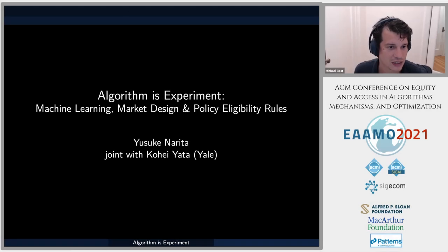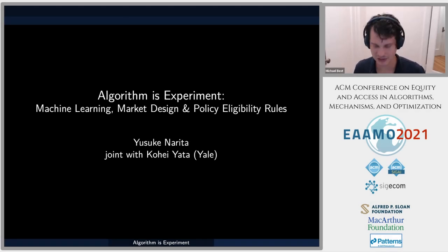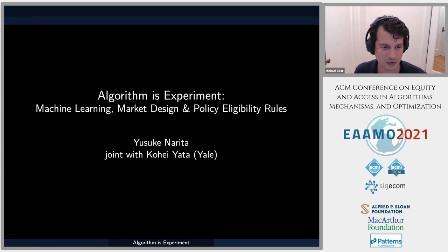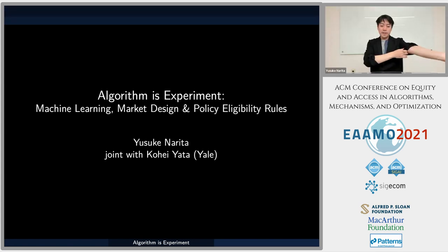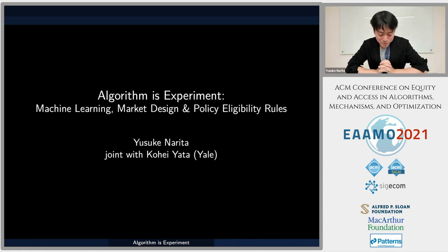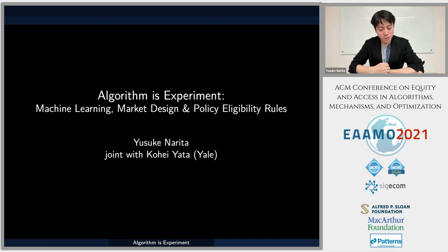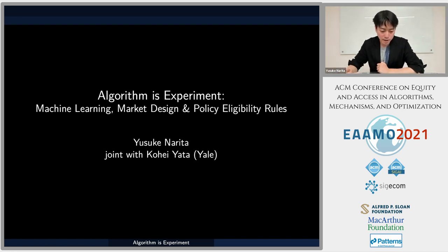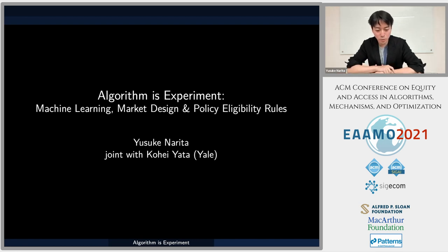Yusuke from Yale is going to tell us about 'Algorithm as Experiment.' You have 15 minutes. All right, so thanks a lot for having me. Today I'm going to talk about 'Algorithm as Experiment,' which is an econometric or statistical method project inspired by a variety of applied domains. This is joint work with Kohei Yata.